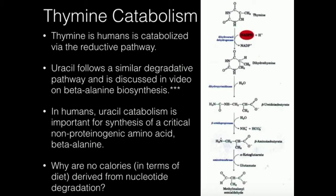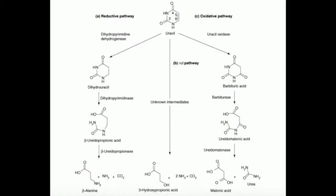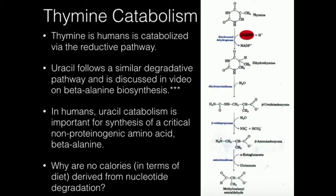This right here is the pathway for catabolism of thymine. In general, as we'll see in the next video, uracil catabolism is going to follow this reductive pathway on the left side, and it's going to follow exactly the same set of enzymes — except thymine catabolism is going to have an extra enzyme at the end because thymine has this extra methyl group.